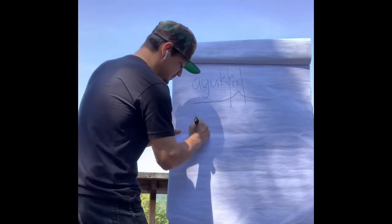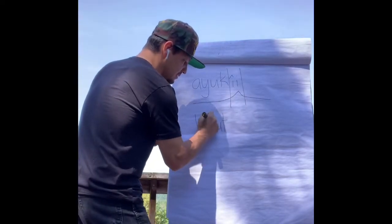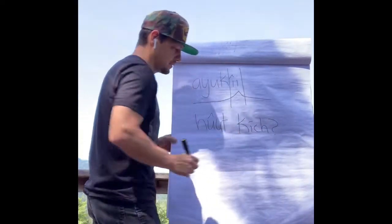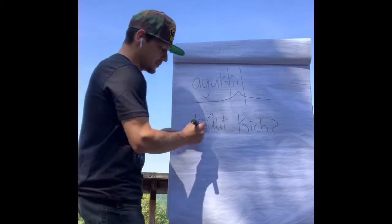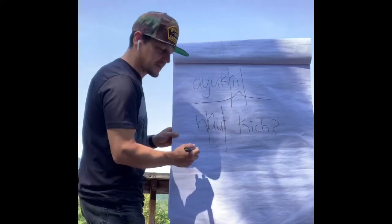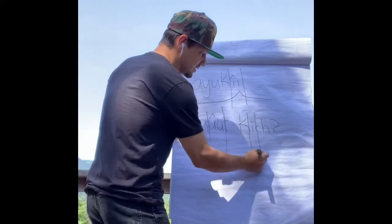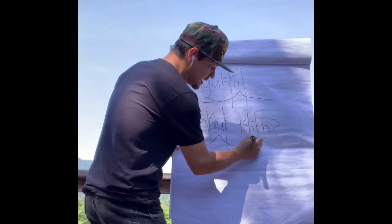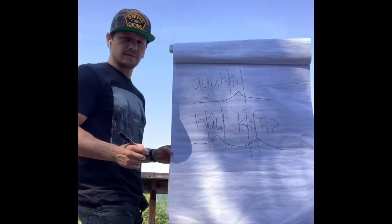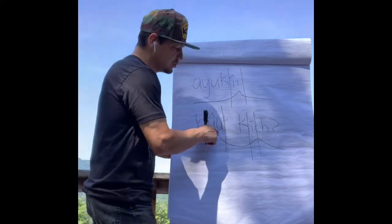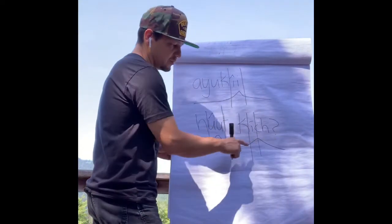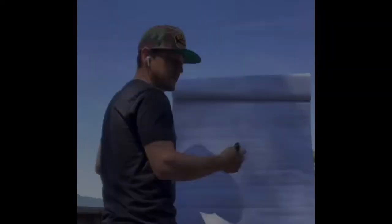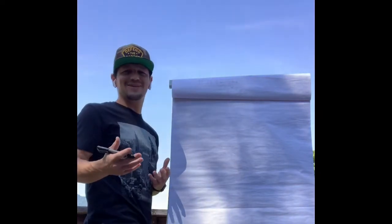Then we have hoot kitch. Isolate the long U — it has a circumflex accent. Isolate the short I because it has an acute accent. Hoot kitch. So we go up and down in the long U. Hoot kitch. Then we just go up on the short I, then the CH we come back down. And that means 'how are you?'